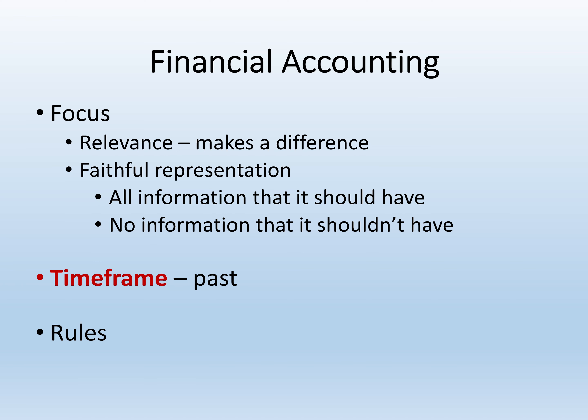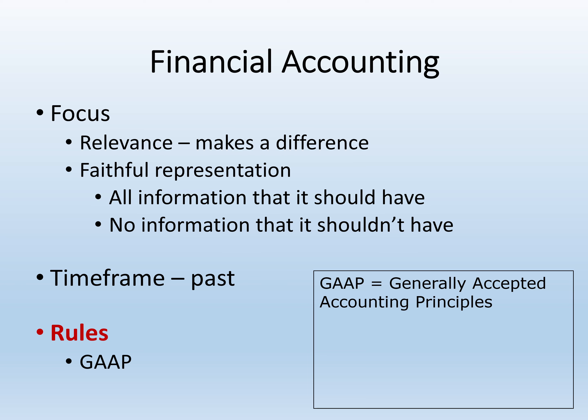Financial accounting doesn't allow a firm to guess about the future. Instead, it focuses on the past — on things that have already happened — because knowing what happened in the recent past gives investors and creditors some idea of what's likely to happen in the future. To ensure relevance and faithful representation, financial accounting has a lot of rules. In the United States, these rules are called GAAP, which stands for Generally Accepted Accounting Principles.